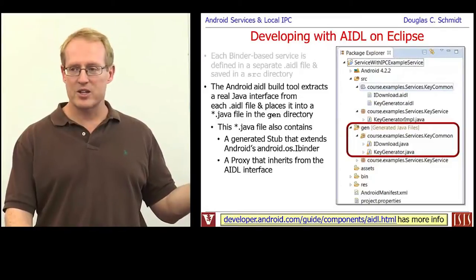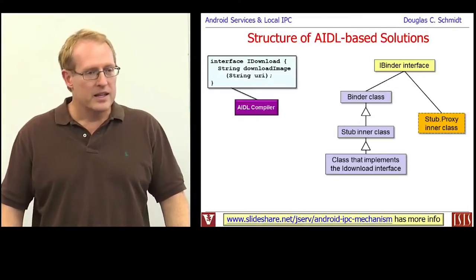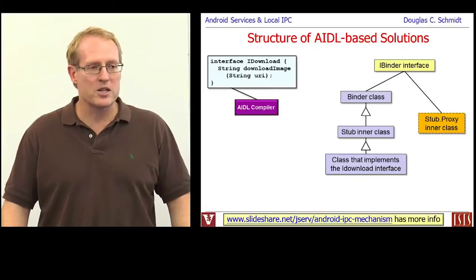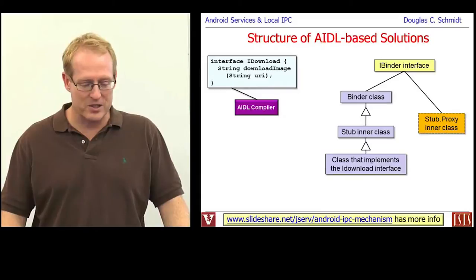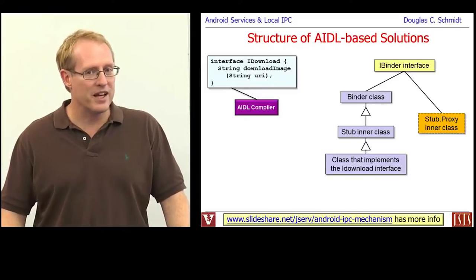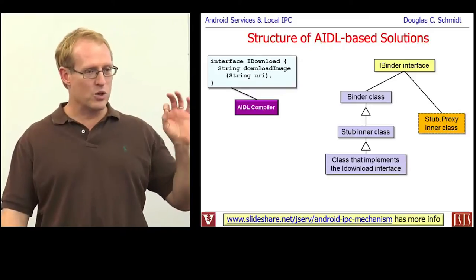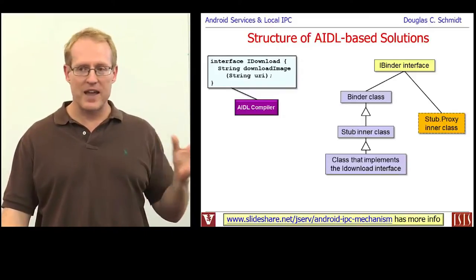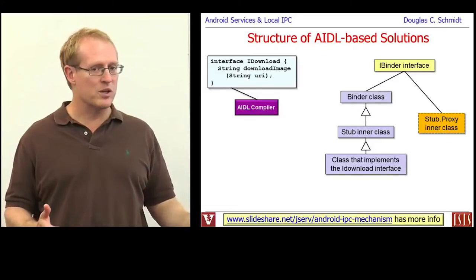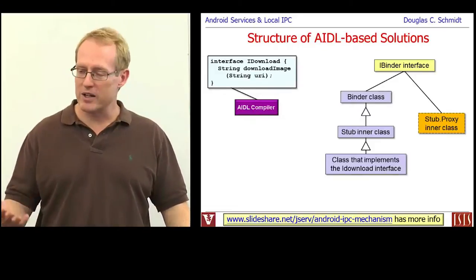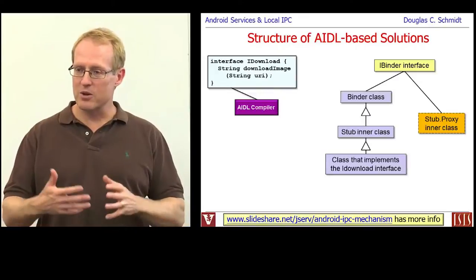If you take a look at the documentation, you'll find lots more information about how AIDL works. There are a lot of different moving parts, and it helps to break them down by a number of different criteria. Assuming we have an interface like the IDownload interface, we're going to have a couple of different kinds of entities involved. When you take a look at the generated code, you'll see all of these things and how they appear, so I'm going to give you a high-level view first.